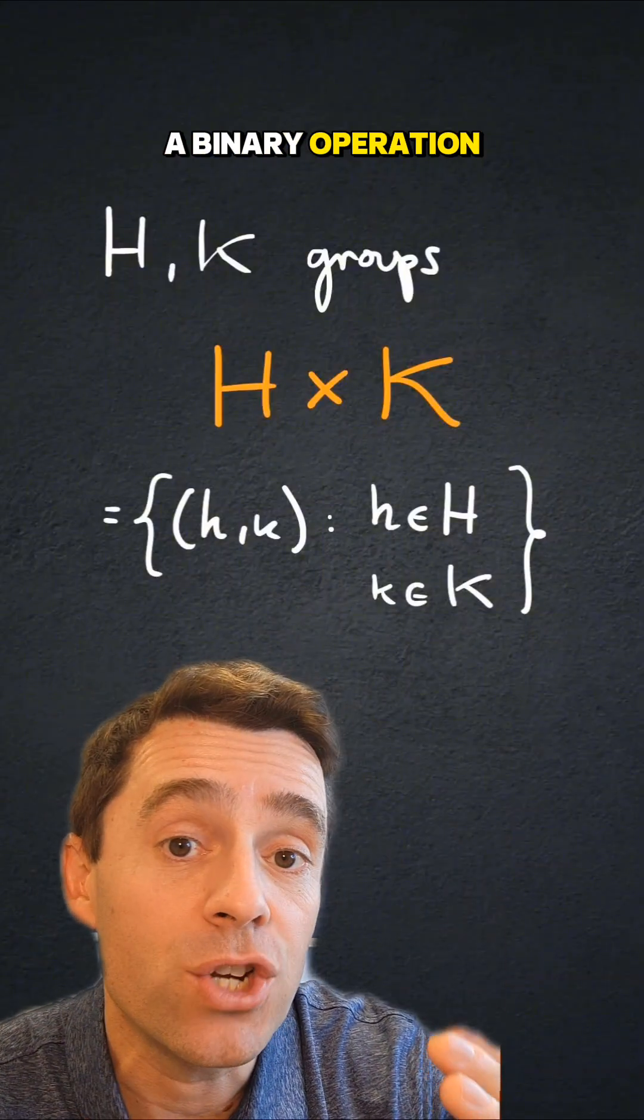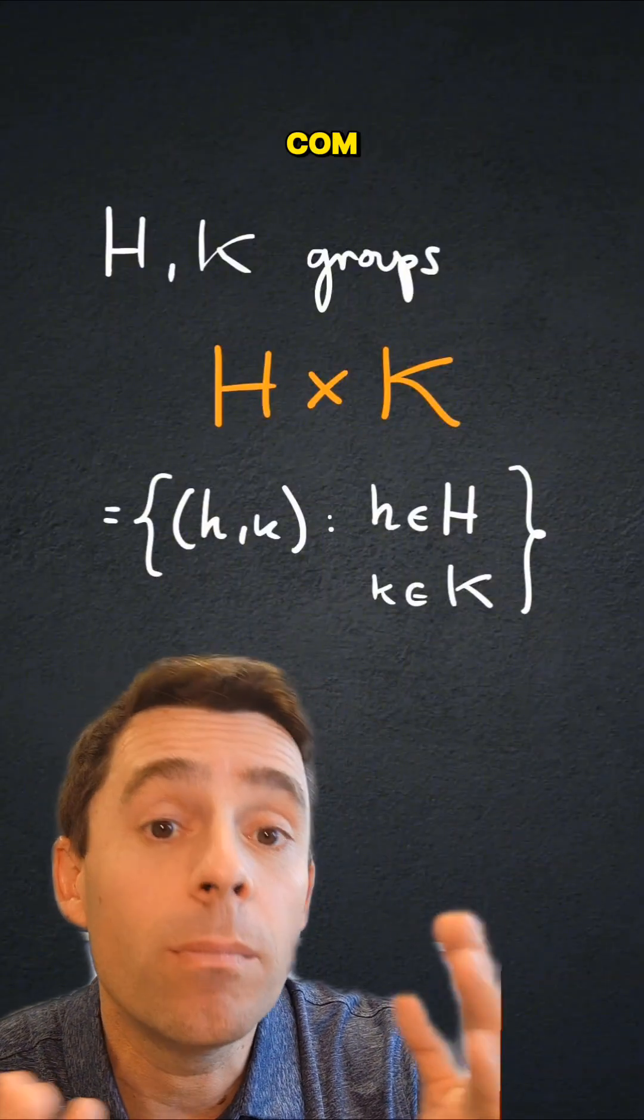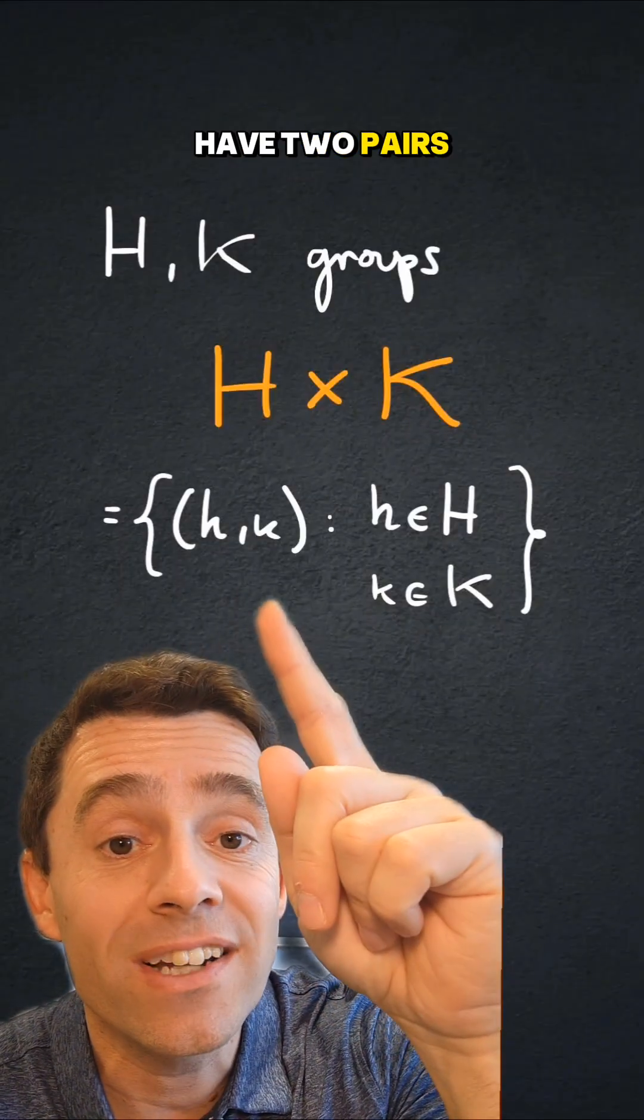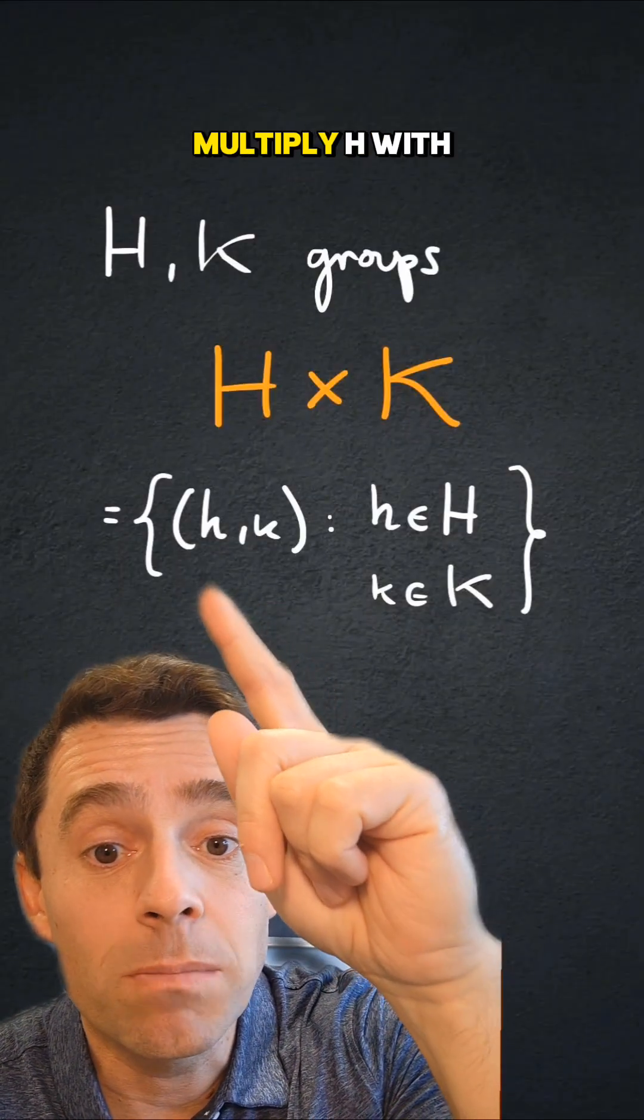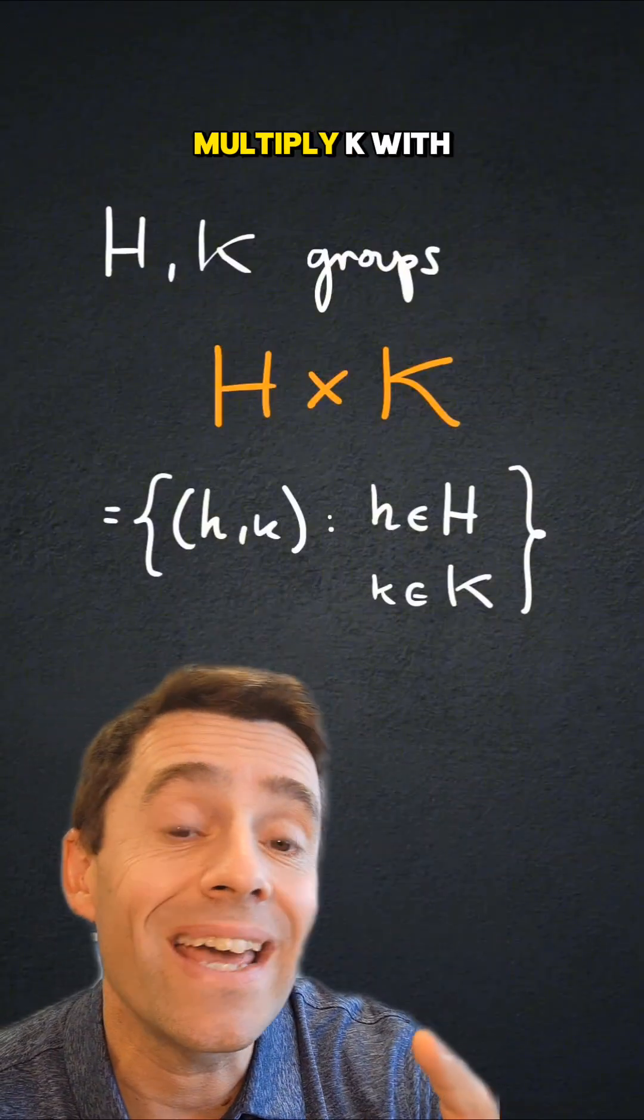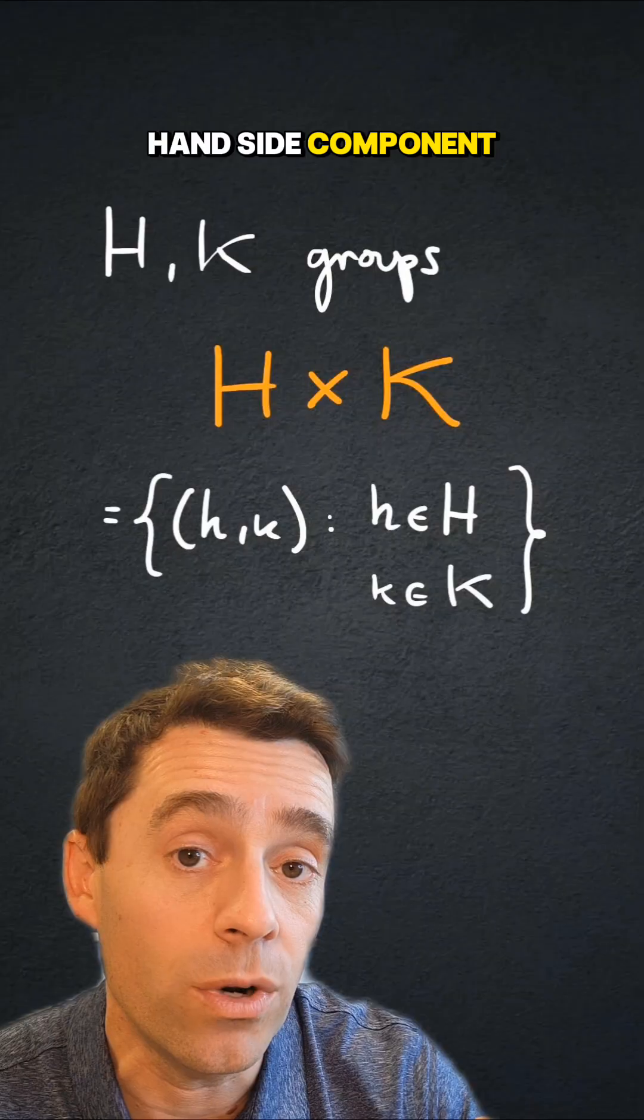And we put a binary operation on those by multiplying elements component-wise. So if I have two pairs like this, then I would multiply h with h' to get my left component, and I would multiply k with k' to get my right-hand side component.